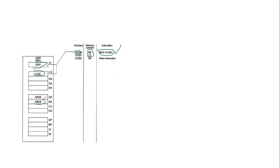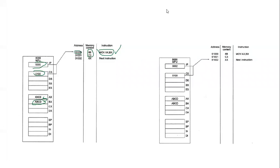If we execute the instruction, whatever the BX value is — and the BX value is ABCD — it will be moved into the AX register. One can see that the AX value is updated: the BX value is now moved into AX. Furthermore, IP is incremented by two because these two bytes have been consumed, so IP now points to the next instruction at 01002h, which can be calculated using the CS and IP values.